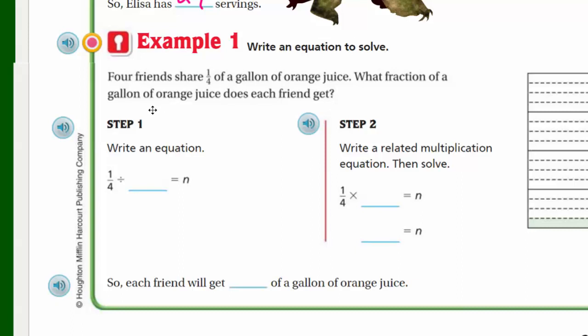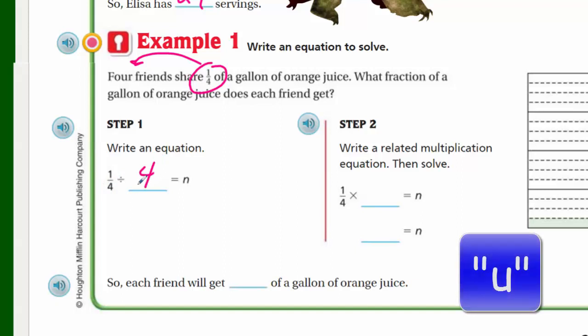Now, let's just Example 1, write an equation to solve. This is four friends share one quarter of a gallon of orange juice. What fraction of a gallon of orange juice does each friend get? It says we have to write an equation, and look at, we're even getting into something called variables, very cool. So this variable here is n. Now we have one quarter divided by, well, we'll write the equation, and this is the size of that group. So one quarter divided by four would fit here then.